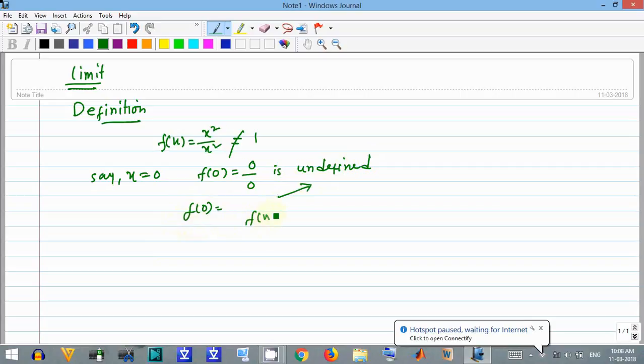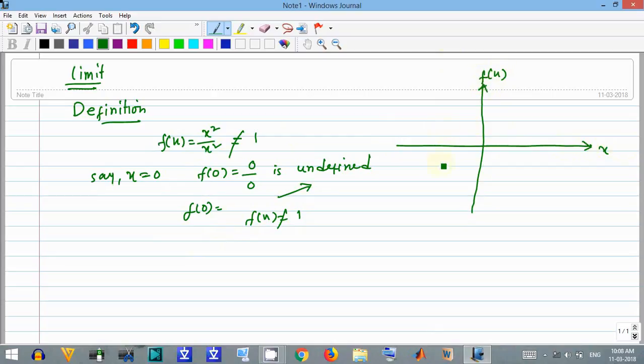So we cannot say f(x) equals 1. If we plot f(x), say this is x and this is f(x) and this is 0. If this is 1, then this will be like this - there is a gap at x equals 0.